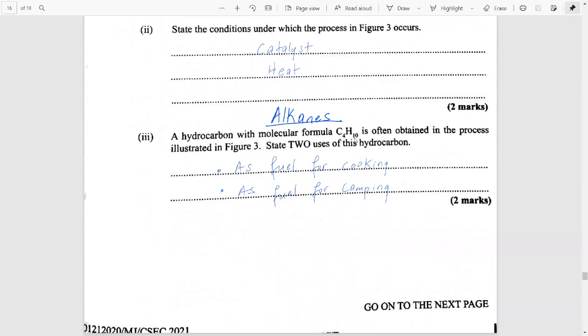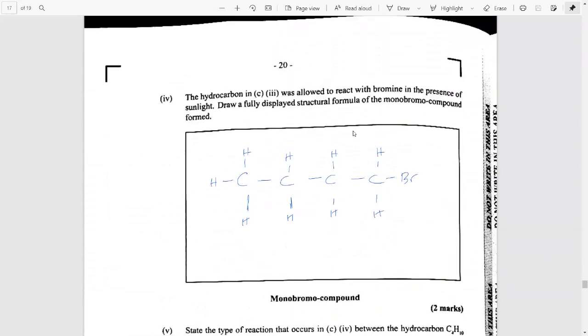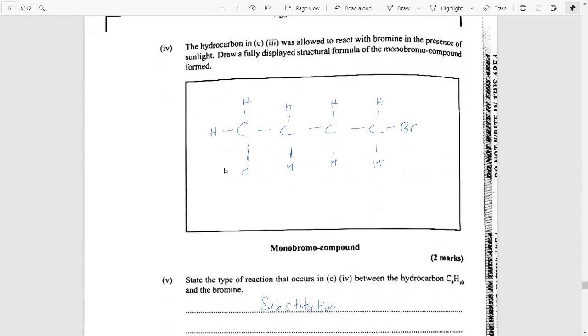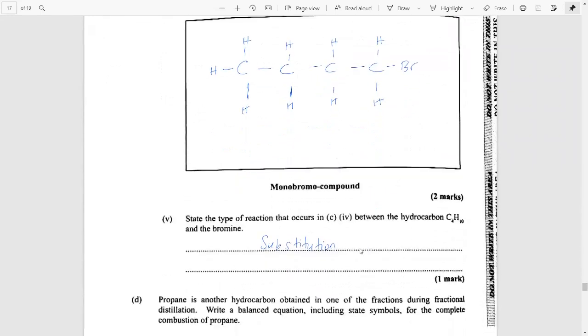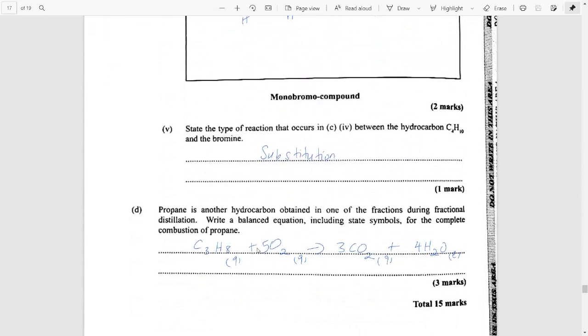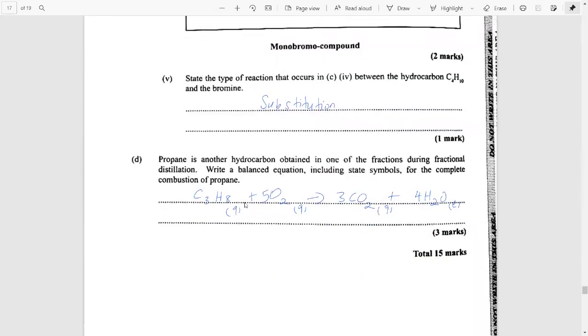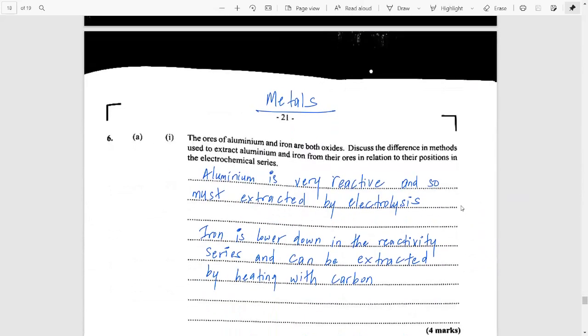And then you had the alkane butane here. And you were asked what it was used for. It could be used as a fuel for cooking or for camping. And you were asked to show what you would have formed if you reacted butane with bromine in UV light. You would have replaced one hydrogen with bromine as you were asked to show the monobromo compound. This would have been the structure and the reaction was a substitution reaction. And then the balanced equation for the combustion of propane would mean that you would form three molecules of carbon dioxide and four molecules of water.